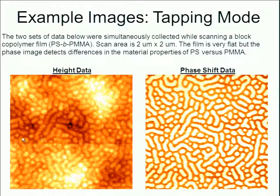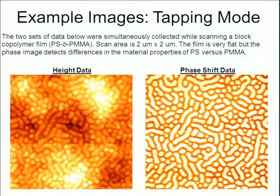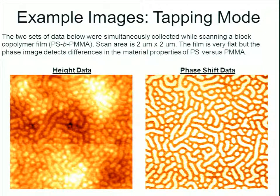This is a block copolymer of polystyrene and polymethylmethacrylate. The sample overall does not have a very great variation in height — a hill might be only 3 nanometers taller than a valley, which is a pretty flat surface. But looking at the phase shift data, we can clearly see the distinction between regions of polystyrene and regions of polymethylmethacrylate, two different polymer materials with different properties, surface energies, and viscoelasticity.